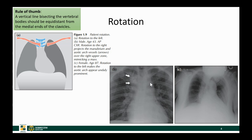Here are two examples. In the first case, the patient is rotated to his right because the distance from the spinous process to the right clavicular head is larger than to the left. This creates an apparent mass which is not a true mass — it's just due to patient rotation. In the second image the heart appears quite large and mediastinal structures are not near normal because the patient has been rotated to his left.